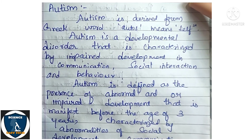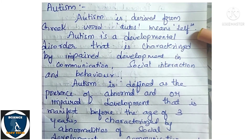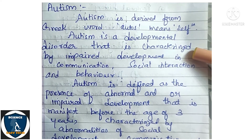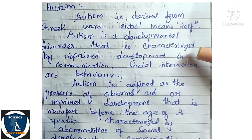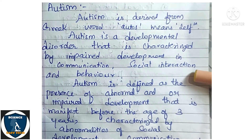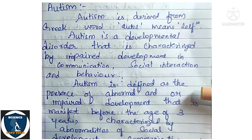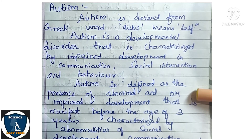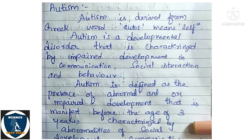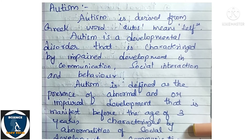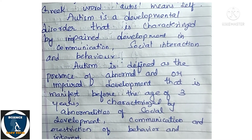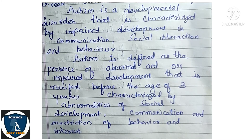Next: Autism. Autism is derived from the Greek word 'autos,' which means self. Autism is a developmental disorder characterized by impaired development in communication, social interaction, and behavior. It is defined as the presence of abnormal and/or impaired development manifest before the age of three years, characterized by abnormalities of social development, communication, and restriction of behavior and interest.